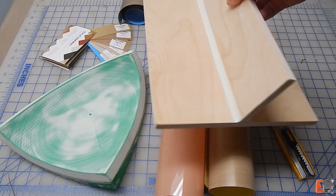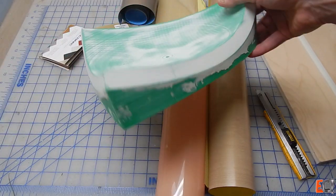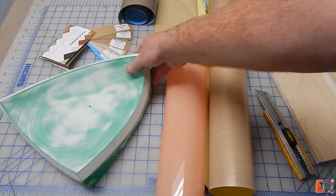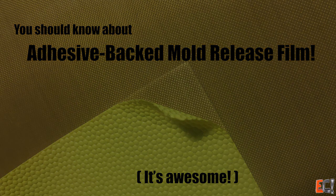If you're building things like quick angle brackets, cheap tooling like this, or surfaces on 3D printed or quick machined MDF molds, you need to know about adhesive-backed mold release film. It's awesome.